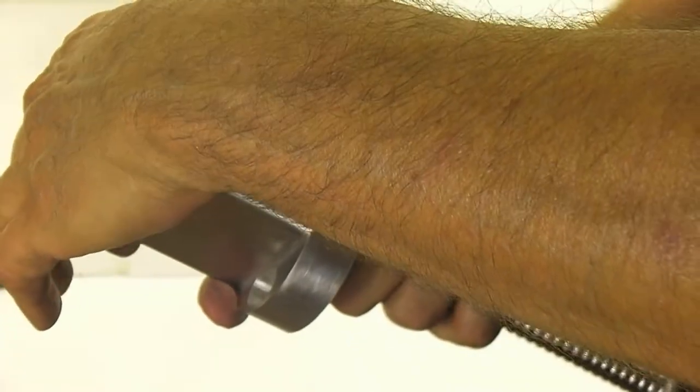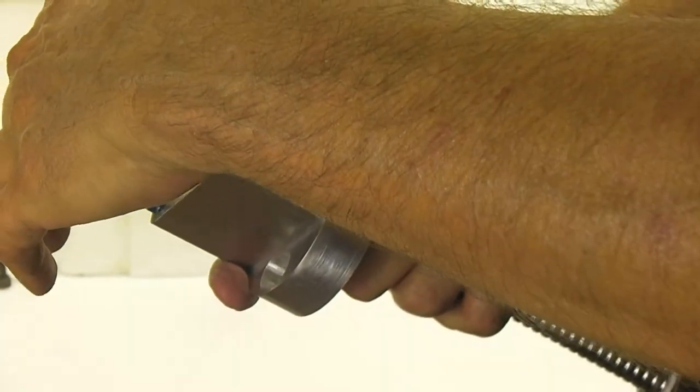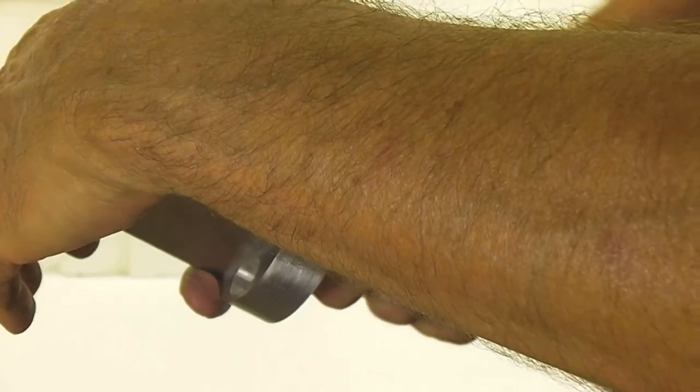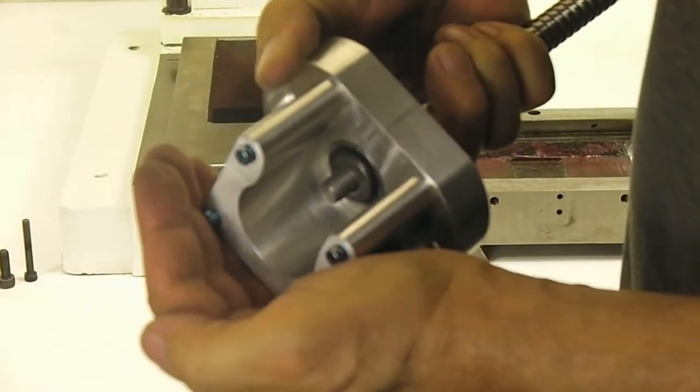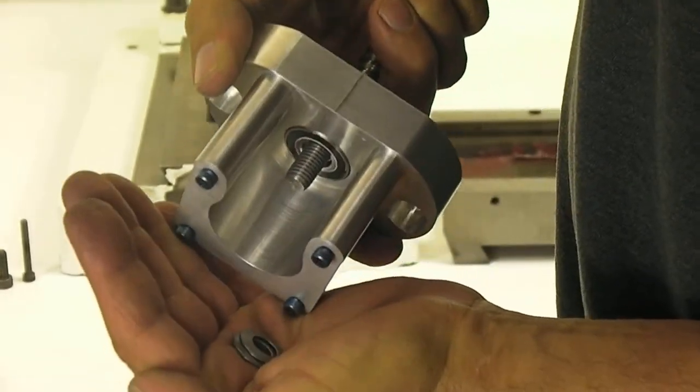Now, behind the coupler, there's going to be two Belleville washers. They sit with the outsides touching first. And we'll just dump them off.